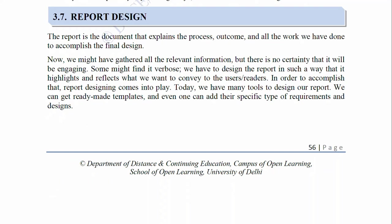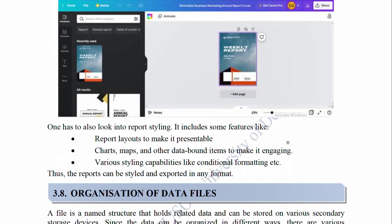3.7 Report Design. The report is the document that explains the process, outcome, and all the work done to accomplish the final design. We might have gathered all the relevant information, but there is no certainty that it will be engaging. We have to design the report in such a way that it highlights and reflects what we want to convey to the users. Today, we have many tools to design our report — ready-made templates and the ability to add specific requirements and designs. Report styling includes: report layouts to make it presentable, charts, maps, and other data-bound items to make it engaging, and various styling capabilities like conditional formatting. The reports can be styled and exported in any format.